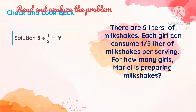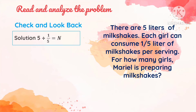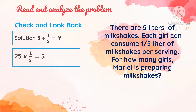To check if our answer is correct, we apply the fourth step: check and look back. Our answer was 25, so we're going to multiply the quotient by the divisor to get 5. So 25 times 1 over 5 is equal to 5. We can cancel 25 and 5 since they are both divisible by 5 — 25 divided by 5 is 5, and 5 divided by 5 is 1.